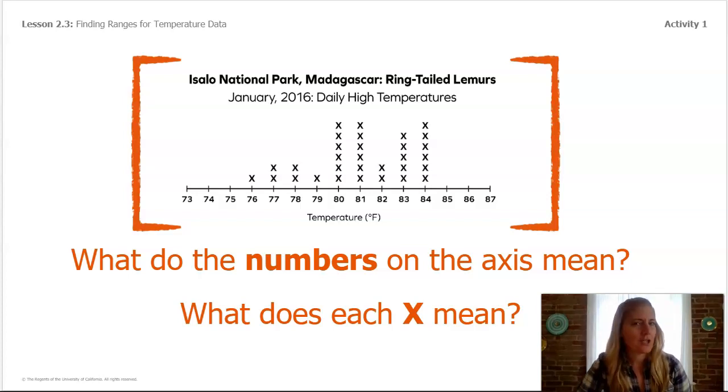If you're not sure, let's look at what features are there to help us. Notice the title at the very bottom underneath the numbers. That says temperature, capital F, which means Fahrenheit. So that means the axis tells us the temperature.